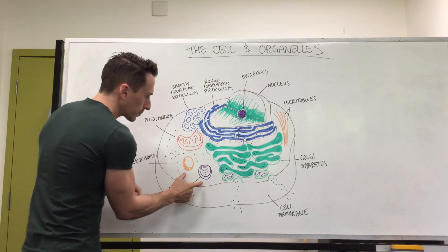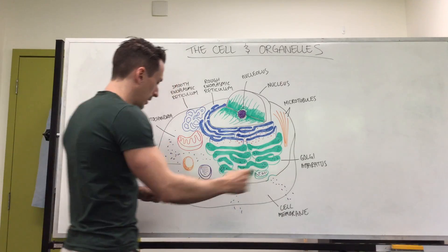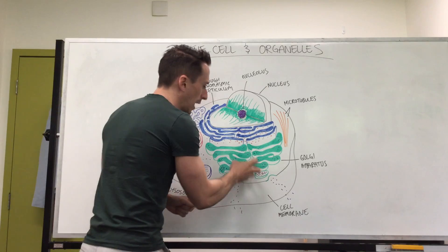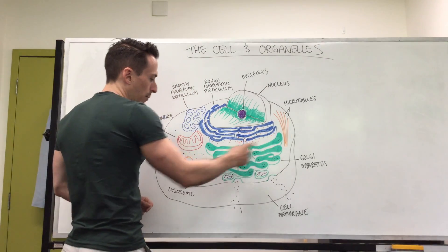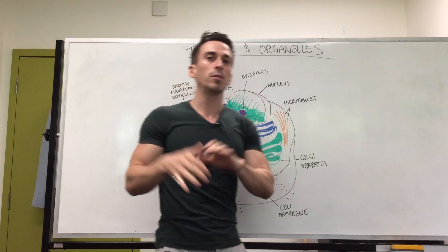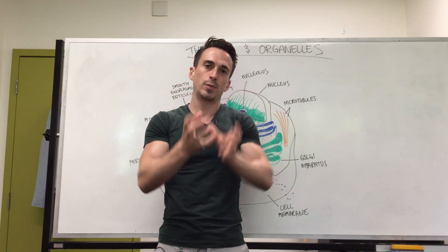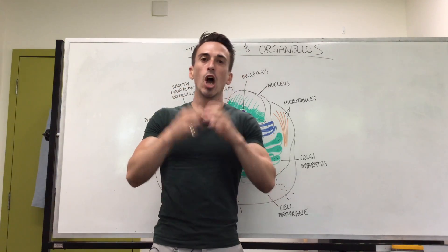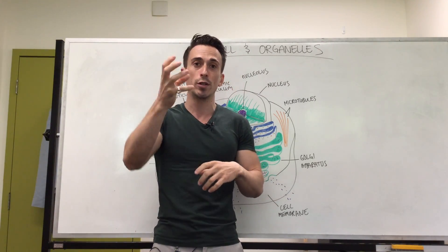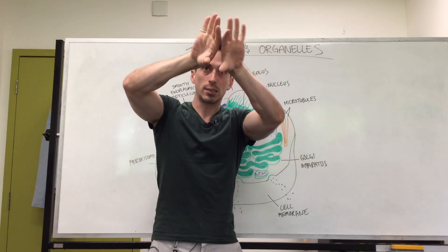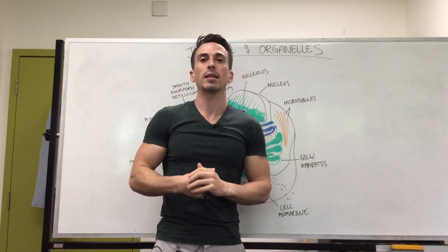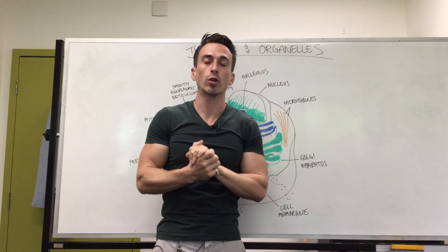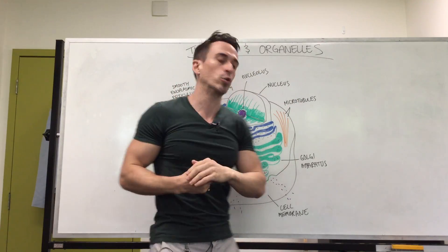We've also got two important structures here: a lysosome and a peroxisome. A lysosome is a little vesicle that buds off from the Golgi apparatus and plays a really important role in breaking substances down — it degrades things. It contains enzymes called hydrolases, which use water to split things apart. So it can take proteins and split them into amino acids, take glycogen which is complex sugars and split it into glucose, and also break down fats.